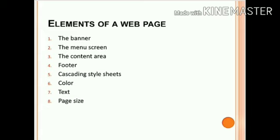The following are the components or elements of a web page: first one banner, second one the menu system, third one the content area, fourth one footer, fifth one cascading style sheets, sixth one color, seventh one text, and the last one is page size. These are the elements of a web page.